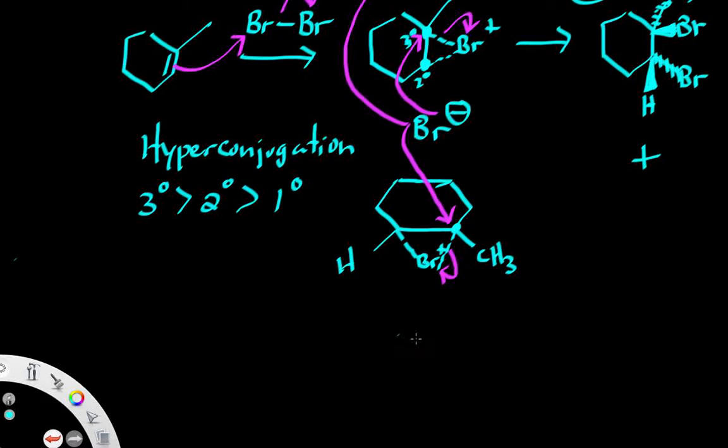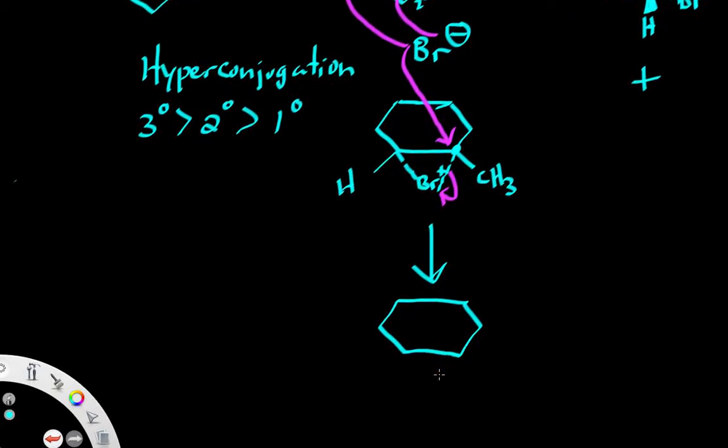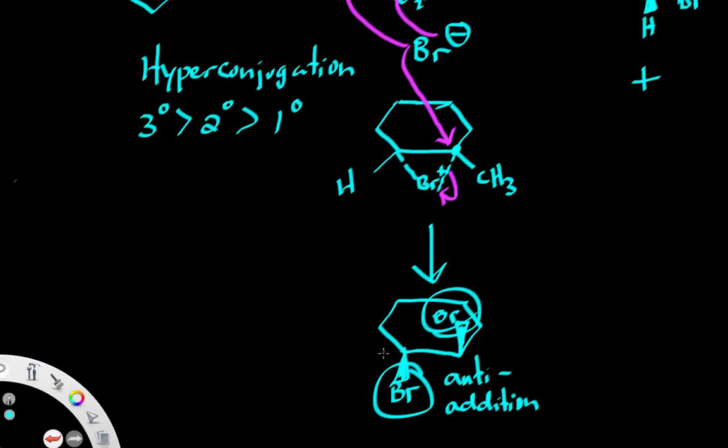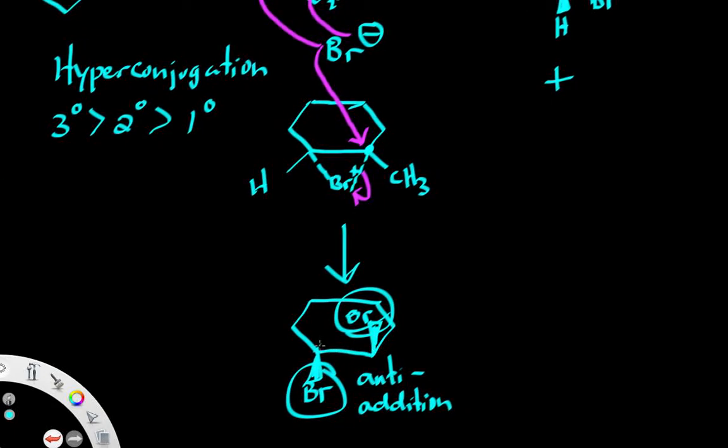Like this where I have a bromine on top and a bromine on bottom. Once again that is anti addition because they are on opposite sides of the ring relative to each other. And I can simply take that information now and transfer it over here.